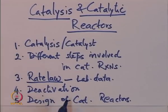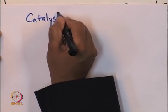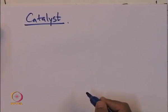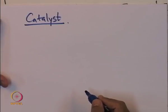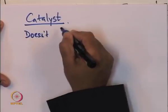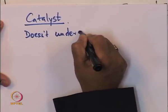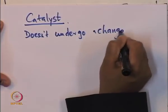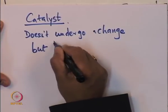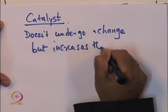Let us start with what is a catalyst — something most of you know. A catalyst is a substance that increases the rate of the reaction but is not consumed during the reaction and does not undergo a permanent change, but increases the rate.